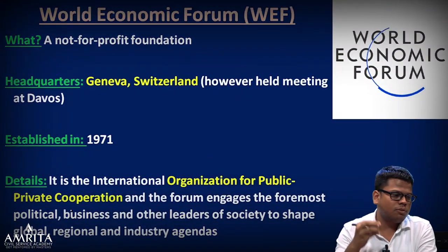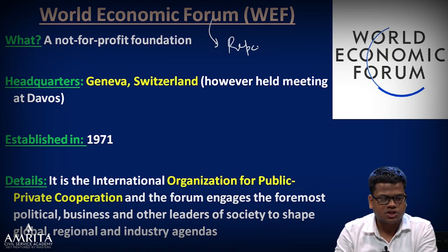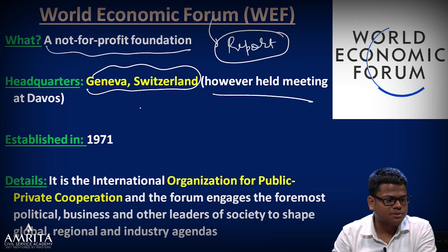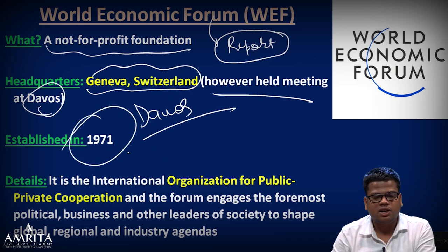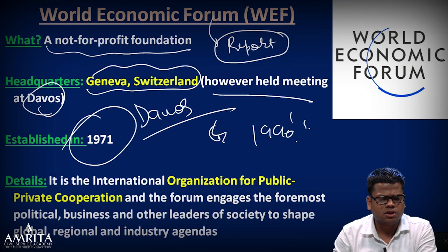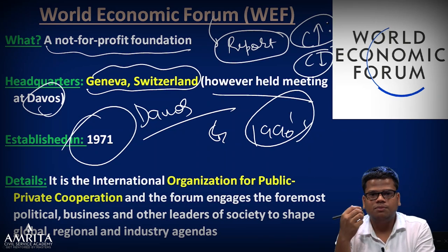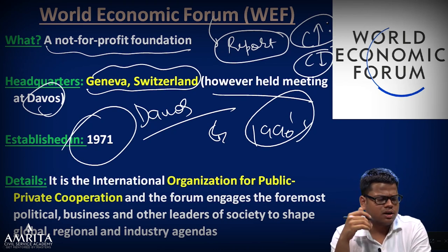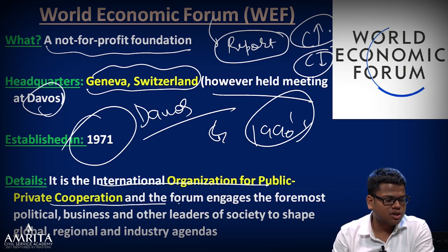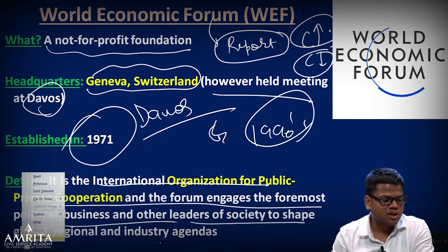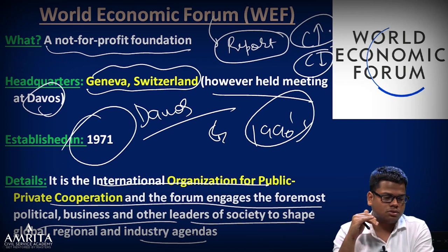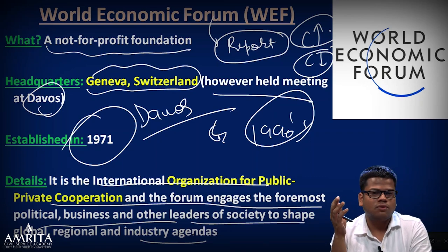The next organization is the World Economic Forum. We already saw one of its reports — the Global Competitiveness Index — in session one. WEF is a non-profit organization headquartered in Geneva, though meetings are held at Davos. It was set up in 1971, gaining significance after the rise of capitalism post the collapse of communism. It is an international organization for public-private cooperation, engaging political, business, and other leaders to shape global, regional, and industrial agendas. It functions as a think tank — useful for essay writing on globalization 4.0.